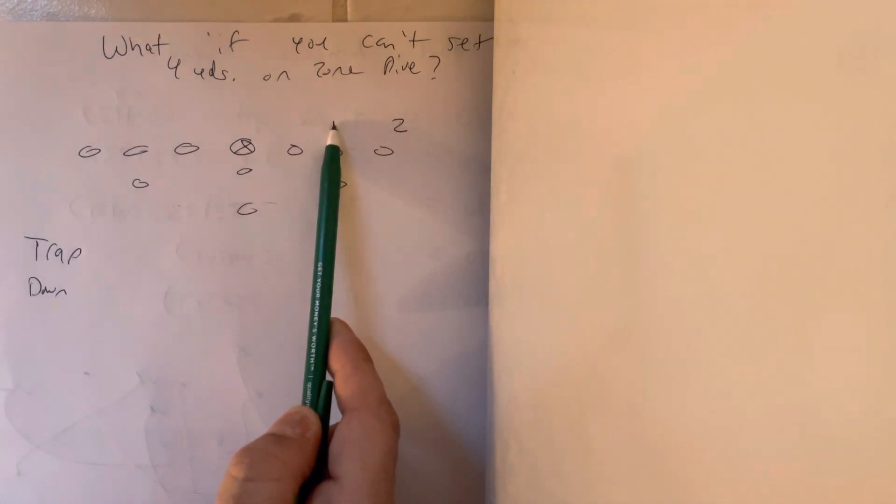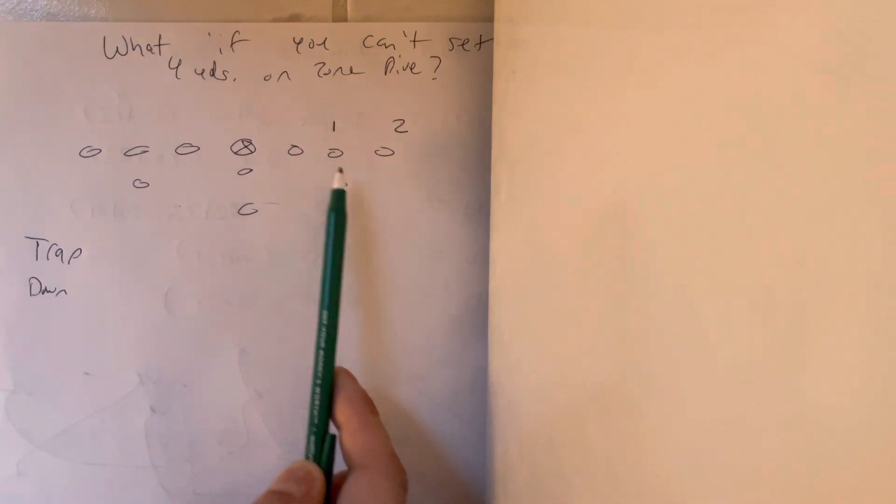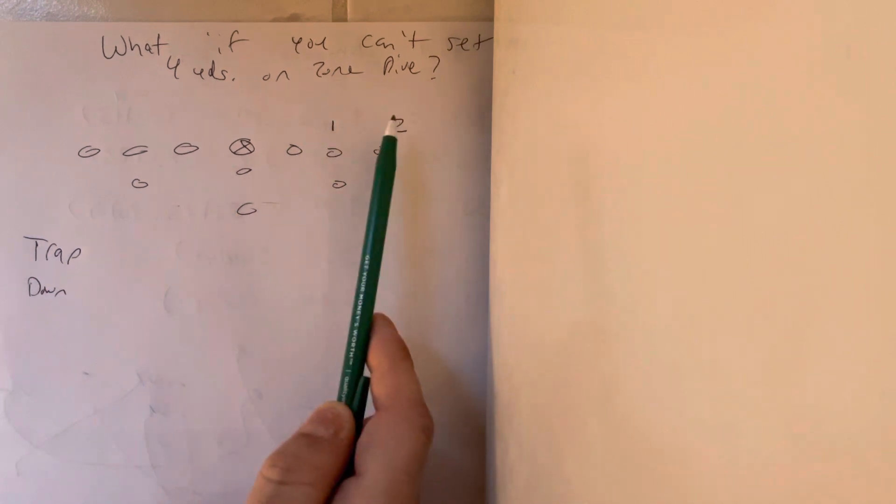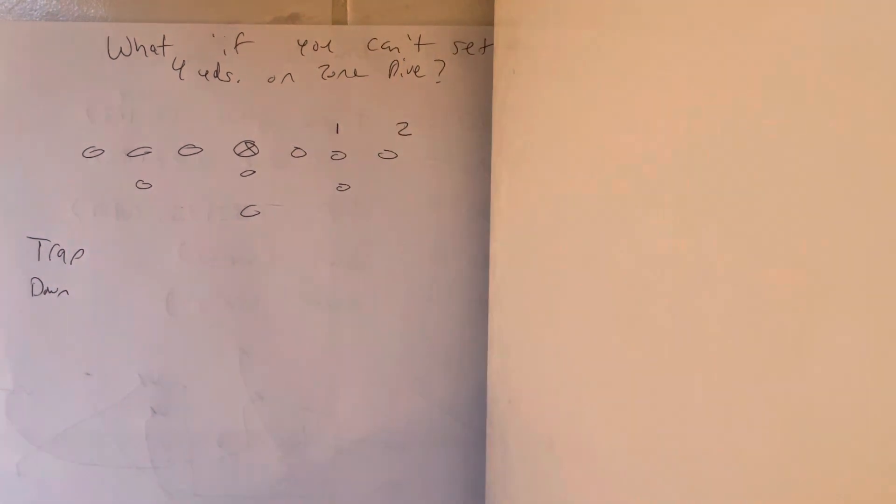We've already established if number one comes up the field and takes the quarterback, you trap him. If one takes the dive and two takes the pitch, you're going to run to the void with the down.